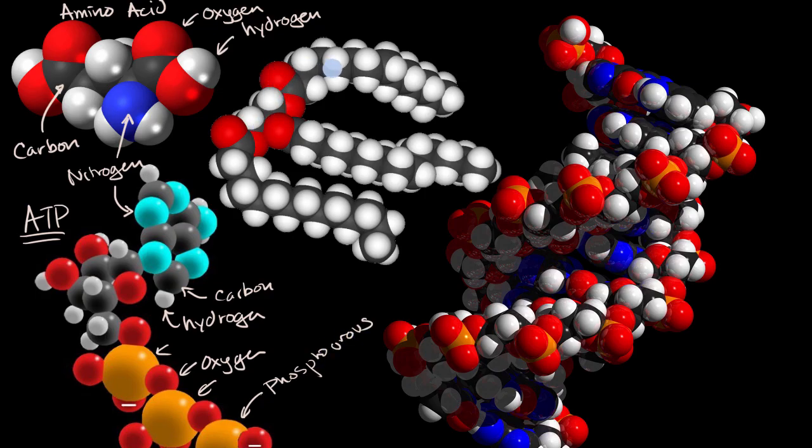This is a model of a triglyceride, often known as a fat molecule. Fat molecules are used for energy storage. And once again, you see many carbons in the dark gray, and then you see these hydrogens, and then a few oxygens.